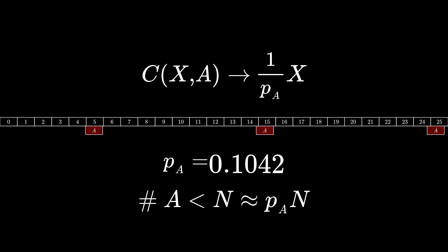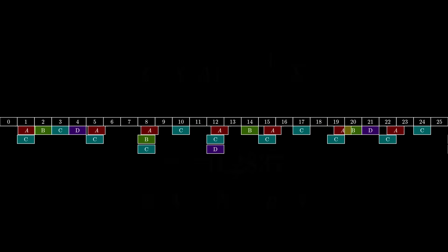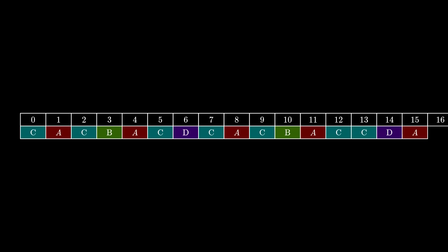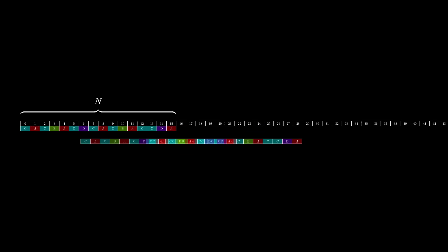Back to our labeling with the naturals, we saw that c of x comma 4 multiplies x by the space between each number labeled 4 and adds something. So if we instead want to divide x by the probability, the space between each number labeled with a symbol should be approximately the reciprocal of the probability of that symbol. The effect of this is that the density of the natural numbers labeled with the symbol corresponds to the probability of that symbol.